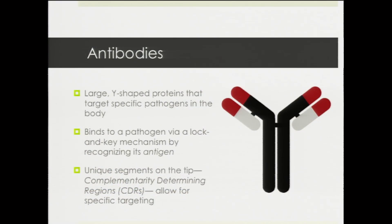Let's start with the basics. What are antibodies? Antibodies are large Y-shaped proteins that play a central role in our immune system. When we get an infection — let's say from a virus or bacteria — we have an antibody that specifically targets that pathogen, and once it binds to it, it destroys it, and eventually that's how we recover from infection. The antibody recognizes a specific molecule on the virus or bacteria called an antigen, and binds to it.